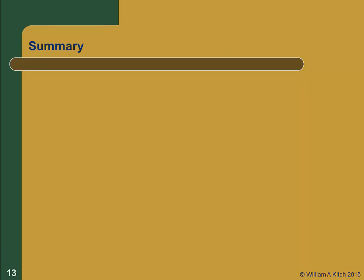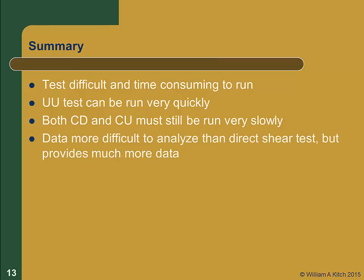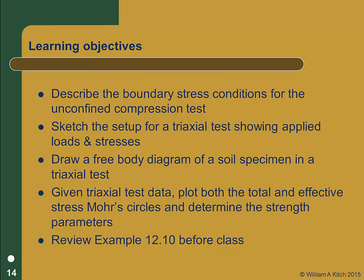In summary, the triaxial test has the following characteristics. The test is relatively difficult and time consuming to run, with the exception of the UU test, which can be run very quickly. Both the CD and CU tests must be run very slowly so that shear-induced pore pressures can dissipate or equilibrate throughout the specimen. The data is more difficult to analyze than direct shear data, but we get much better information from these tests. The strength parameters measured in the triaxial test are more accurate than those measured in the direct shear test. You should now review the learning objectives for this presentation. Example 12.10 in your text presents data from a CU test; you should review this example before class.